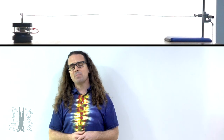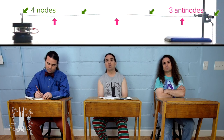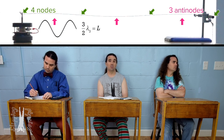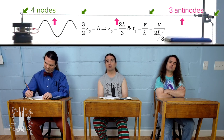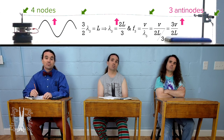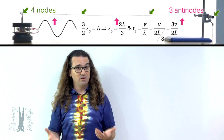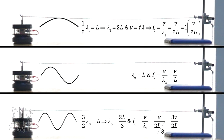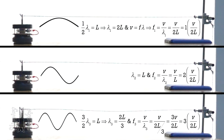Let's add one more. What about the next possible standing wave pattern? The next possible wave pattern has four nodes and three antinodes. That means there are one and one-half wavelengths on the length of the string, and the wavelength equals two-thirds the length of the string. The frequency of the wave in this standing wave pattern equals three times the speed of the wave divided by two times the length of the string.